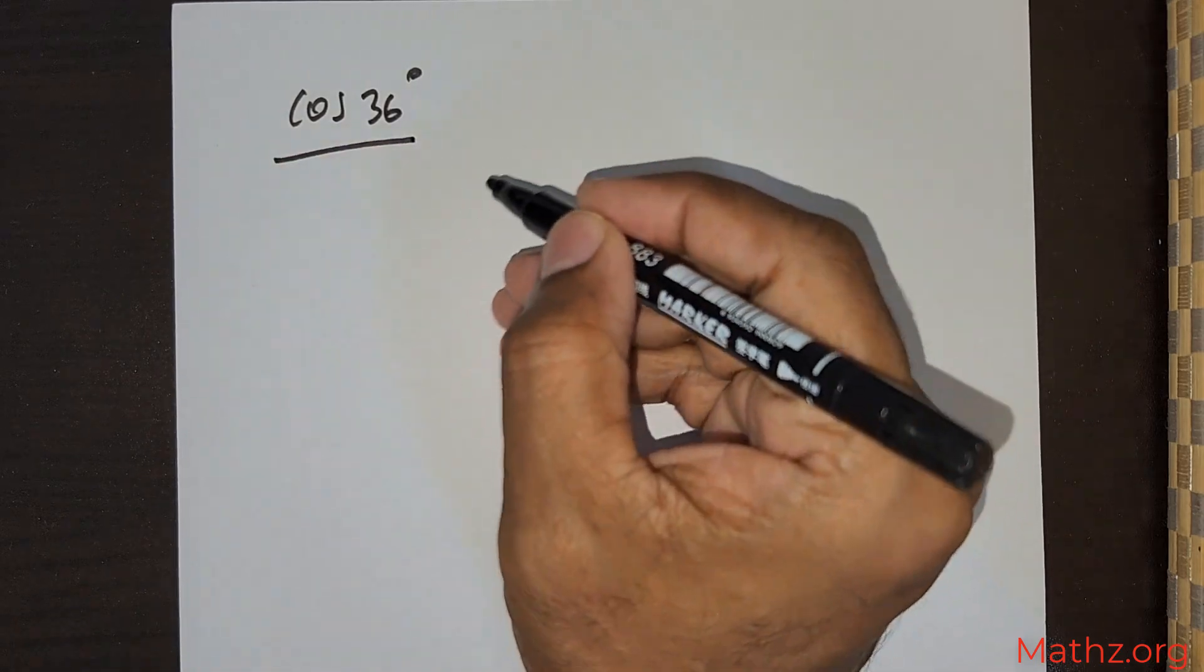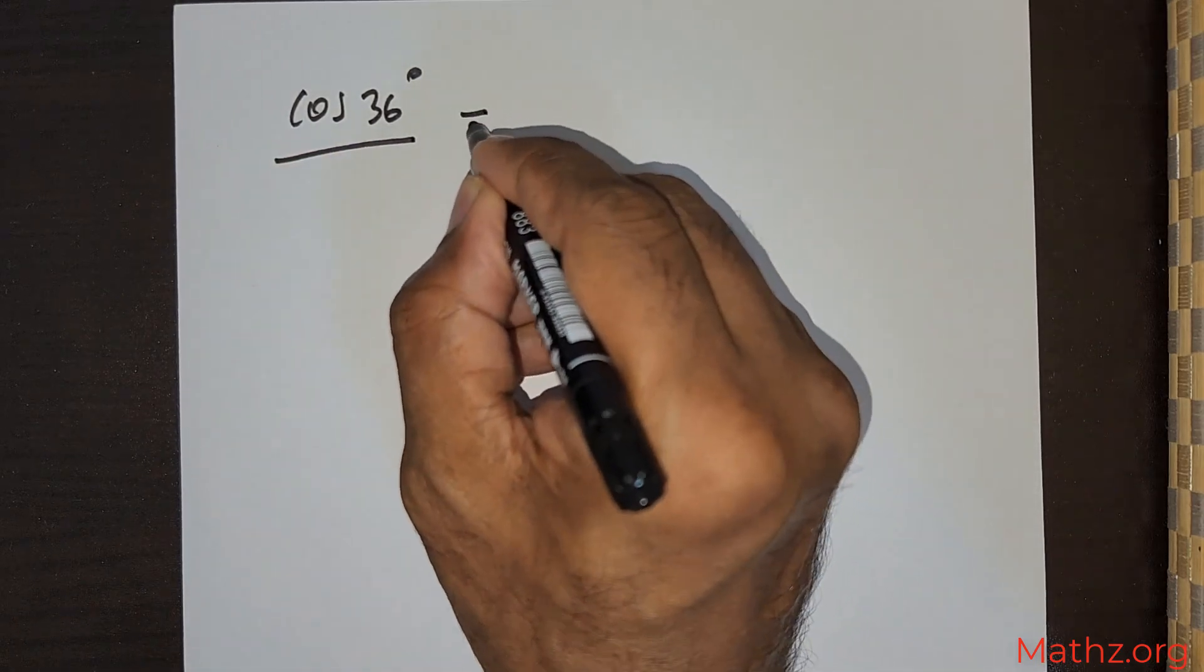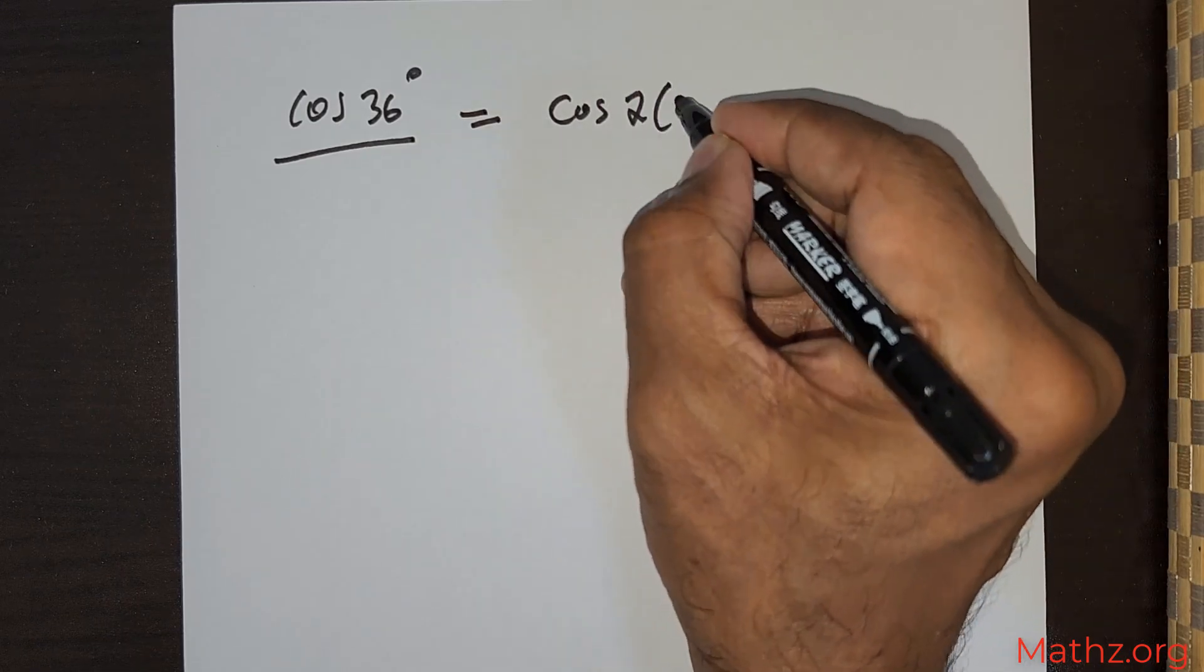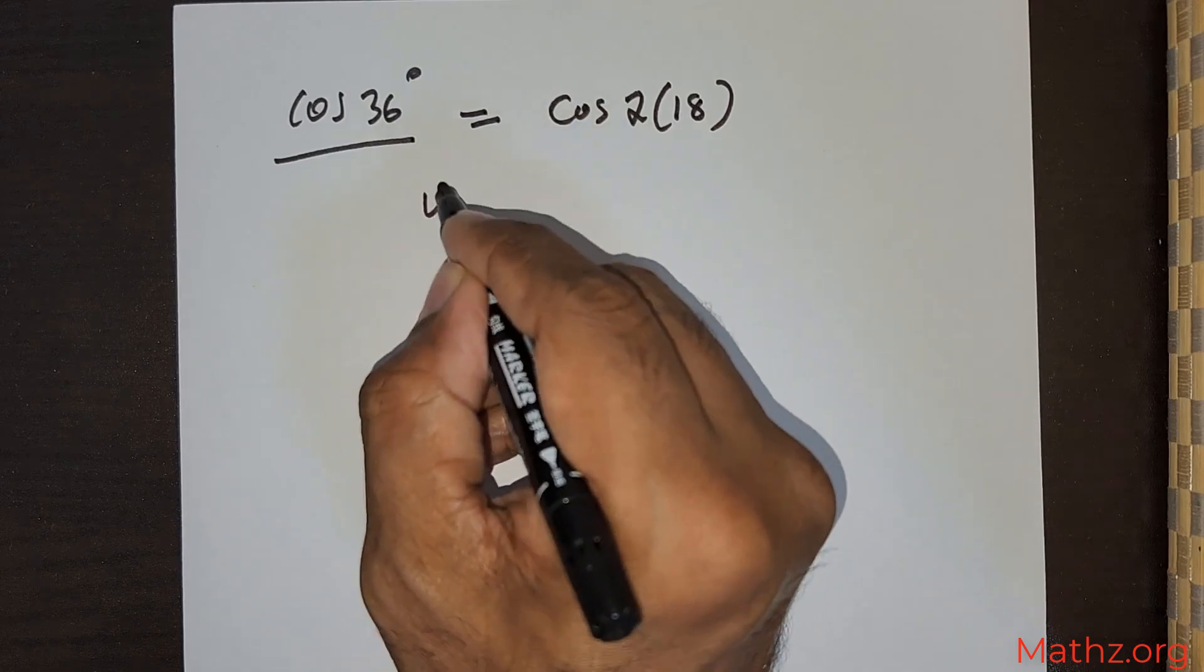Now we need to get the value of cos 36°. Cos 36° can be rewritten as cos 2(18°). This is similar.